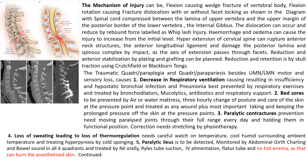One of the most disastrous effects of vertebral injury is traumatic quadriplegia or paraplegia, or quadriparesis or paraparesis, in addition to upper or lower motor neuron motor and sensory loss. In quadriplegia, there is decreased respiratory ventilation, and this stasis can cause hypostatic bronchial infection and pneumonia. This is best prevented by respiratory exercises and treated by bronchodilators, mucolytics, antibiotics, and even respiratory support.